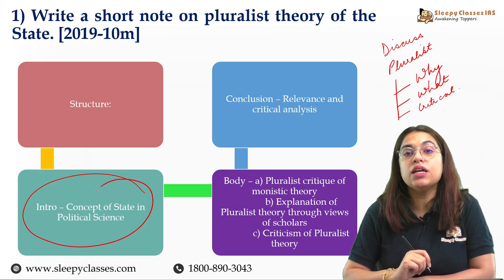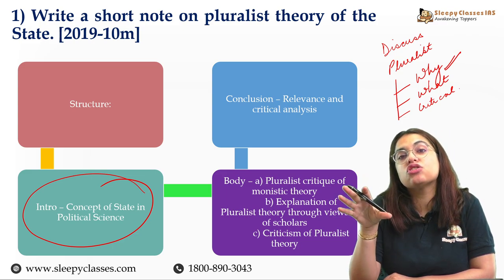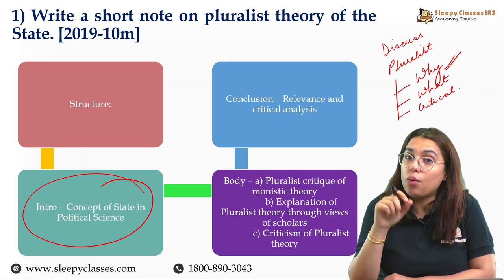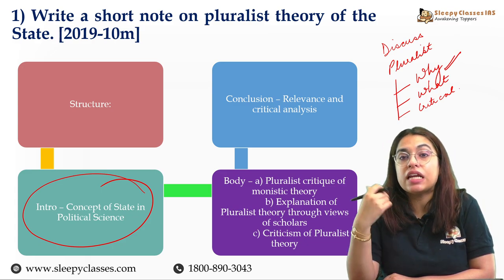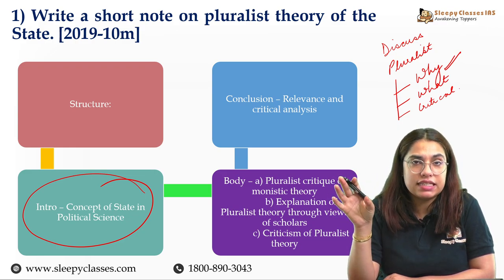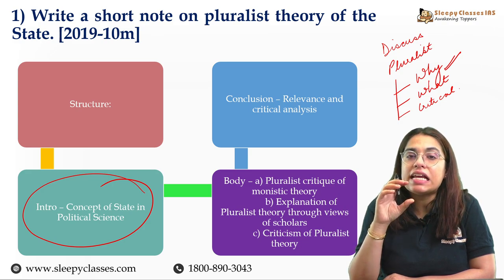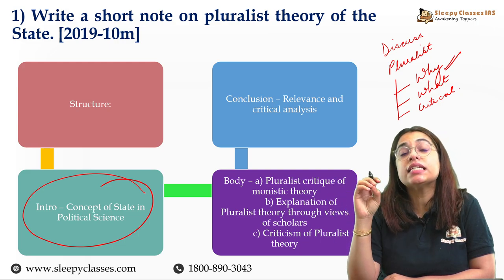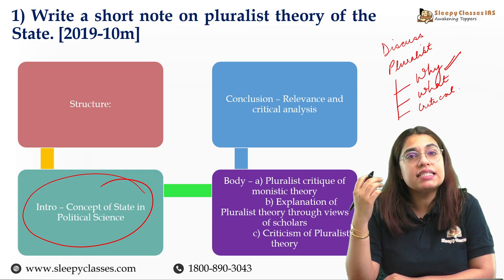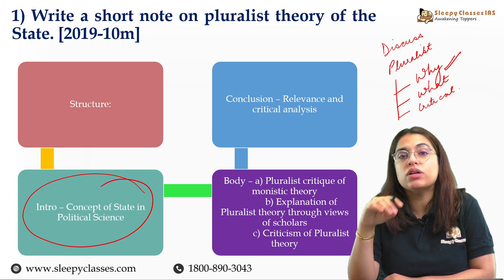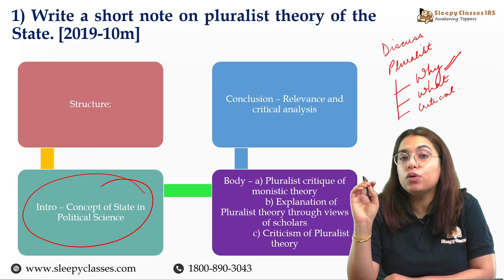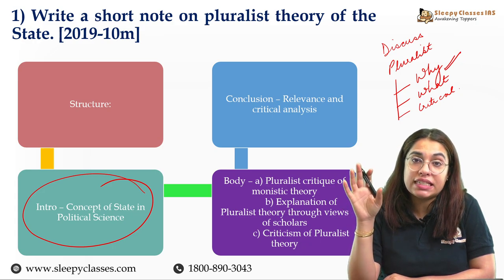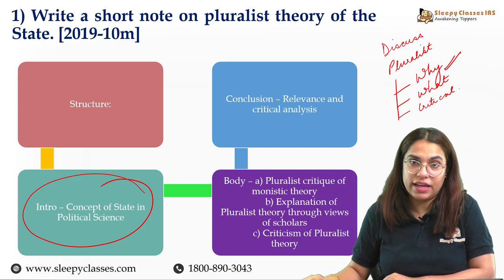In the introduction, you deal with the 'why' — what conditions led to the emergence of pluralistic theory of state. Monistic theory of state was dominant, but its shortcomings led to the rise of pluralistic thought. In the body, explain what you understand by a pluralist concept of state, what its features are, and which thinkers describe it in which ways. Then move on to a critical analysis, and conclude by pointing to the contemporary relevance of the pluralistic state.